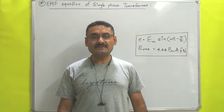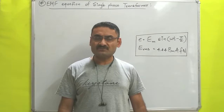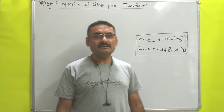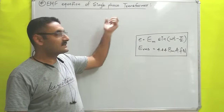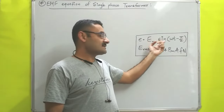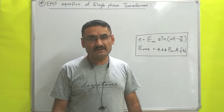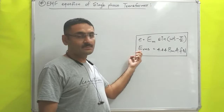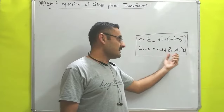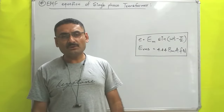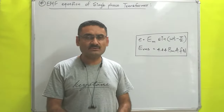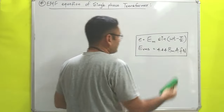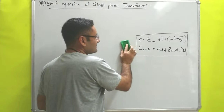Hello students, today we will study unit number 3: transformers. In this video we are going to derive the EMF equation for single phase transformer, which is Em sin(ωt - π/2), and also we will find out the RMS value of this potential, which is 4.44 BmAfN. I hope you are ready with your pen and paper, so without wasting much time let us start.